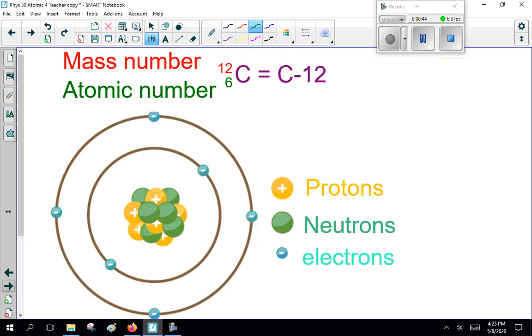Getting back here, the mass number is 12 in this case, that is N plus Z. That tells us the isotope, or which version of the carbon we're dealing with. And the atomic number Z is 6, tells us which element we're dealing with.